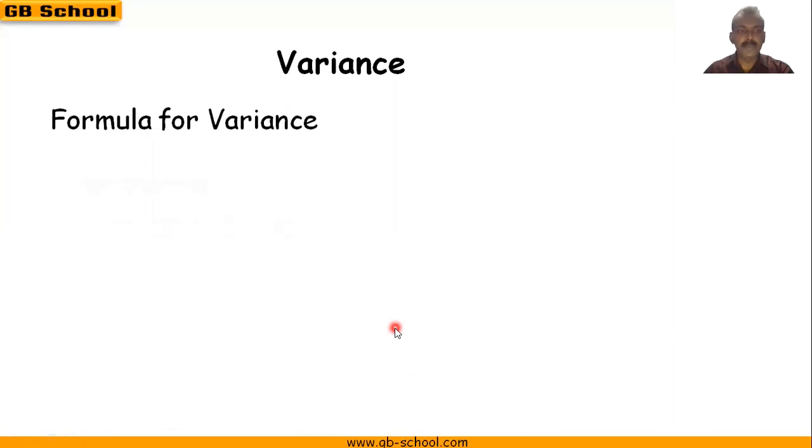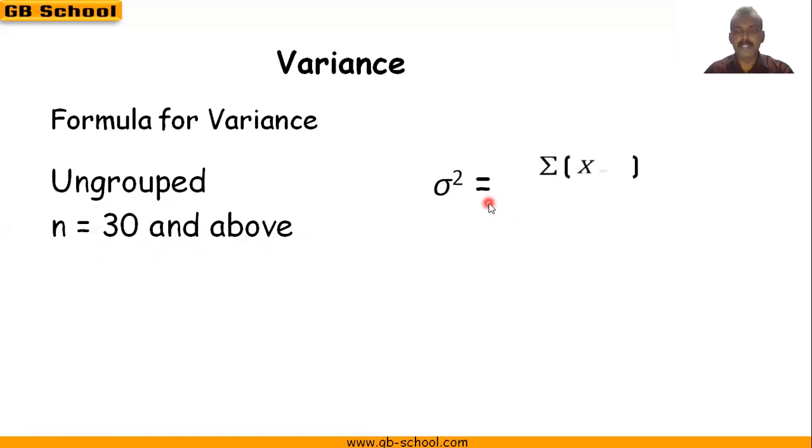Now, for ungrouped data when sample size is 30 and above, the formula is simple: variance equals sum of x minus x-bar whole square divided by n.